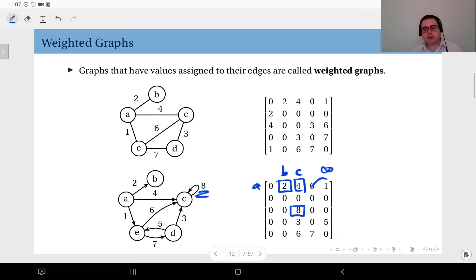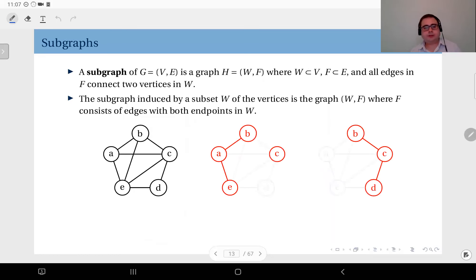Another important concept is subgraphs. A subgraph of G, where the vertex set is represented by V and the edge set is represented by E, is again another graph H consisting of a set of vertices W and set of edges F. Obviously W is a subset of V, and F is a subset of E. But clearly all edges in F, the edges of the subgraph, connect two vertices in W, the vertex set of the subgraph.